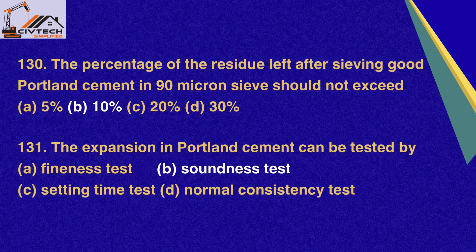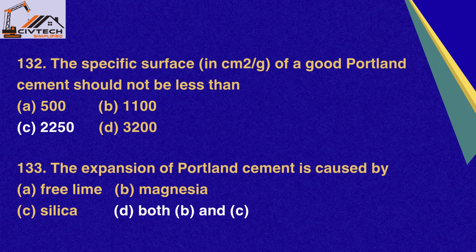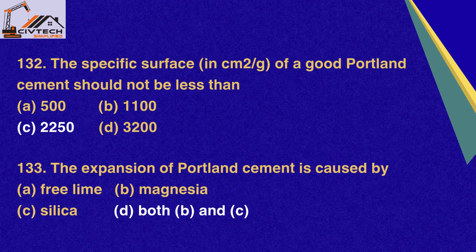Question 131. The expansion in Portland cement can be tested by: A. Fineness test, B. Soundness test, C. Setting time test, D. Normal consistency test. Correct option B: Soundness test. Question 132. The specific surface (in square centimeters per gram) of a good Portland cement should not be less than: A. 500, B. 1100, C. 2250, D. 3200. Correct option C: 2250. Question 133. The expansion of Portland cement is caused by: A. Free lime, B. Magnesia, C. Silica, D. Both B and C. Correct option D: Both B and C (Magnesia and Silica).